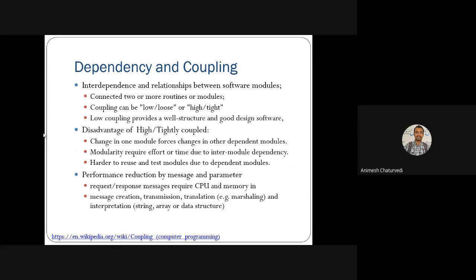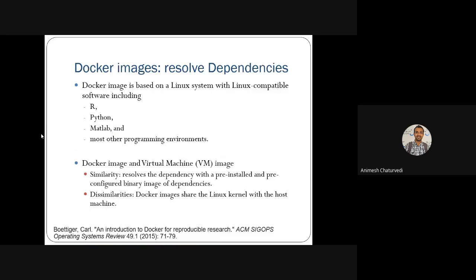Creation, transmission, and translation of messages for interpretation are all overhead due to dependency. Docker images resolve these dependency issues — for example, by preloading R, Python, MATLAB, or any programming environment. Docker images have an advantage over virtual machines because they provide pre-installed binaries and dependencies. Additionally, Docker images differ from VMs in that they don't share all processes required by the OS — the Docker image only shares the Linux kernel required for process management.